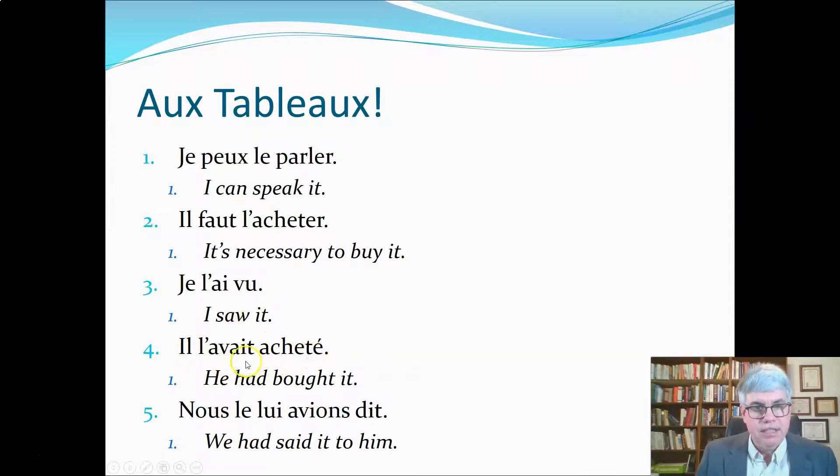Il l'avait acheté. Now, we've got the pluperfect because the helping verb is in the imperfect. Acheté, to buy. He had bought, and then we put the direct object pronoun, it. He had bought it.